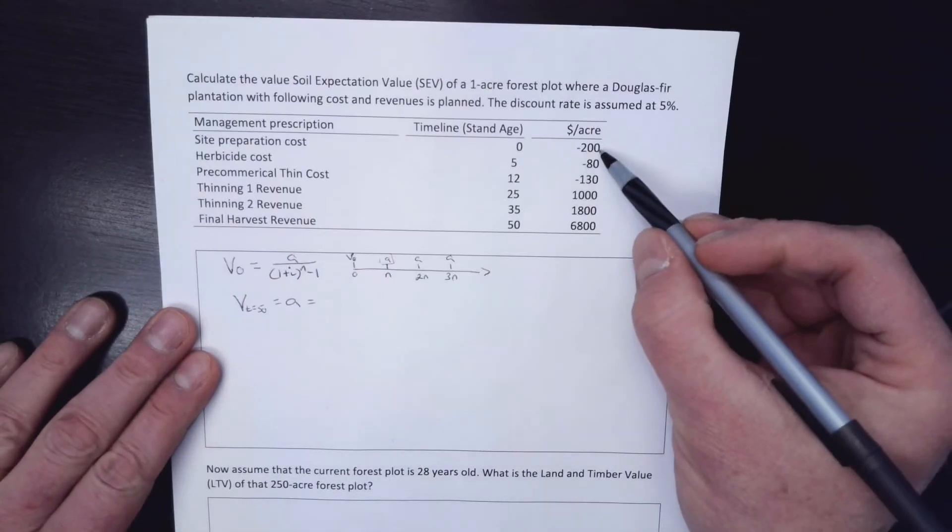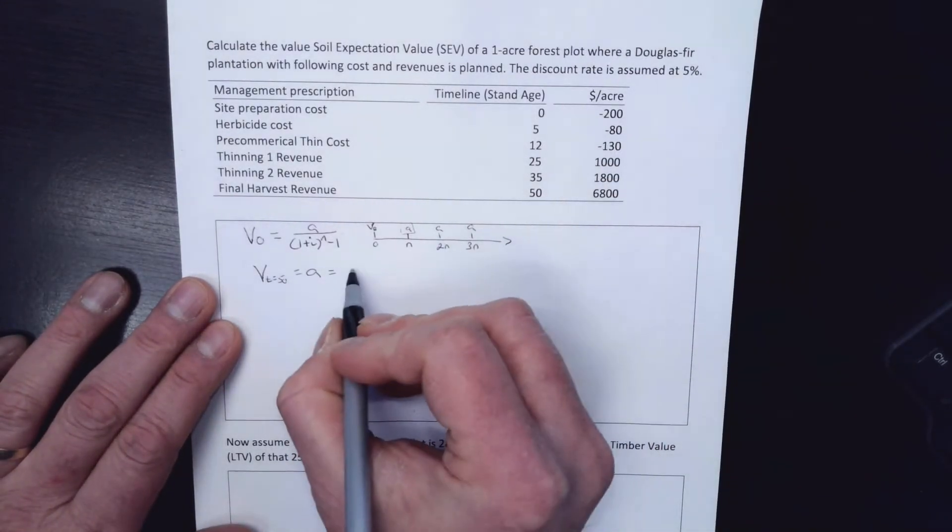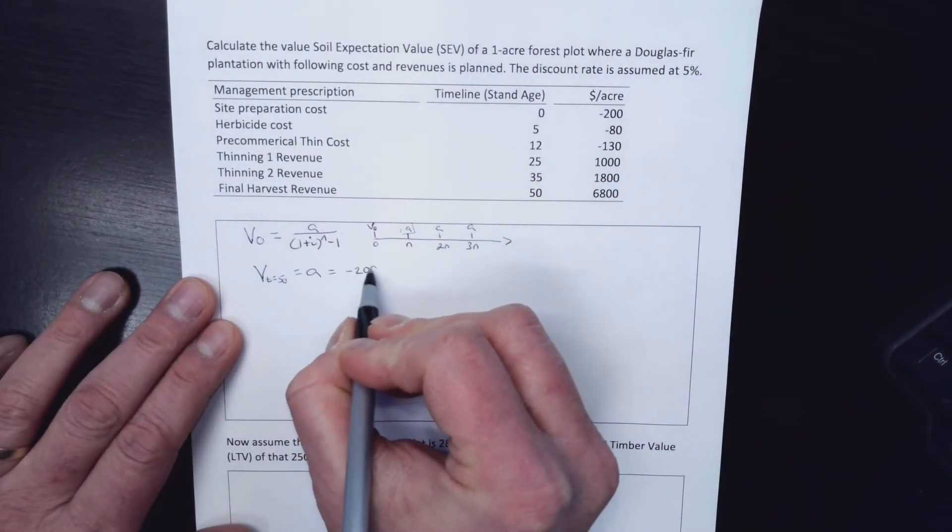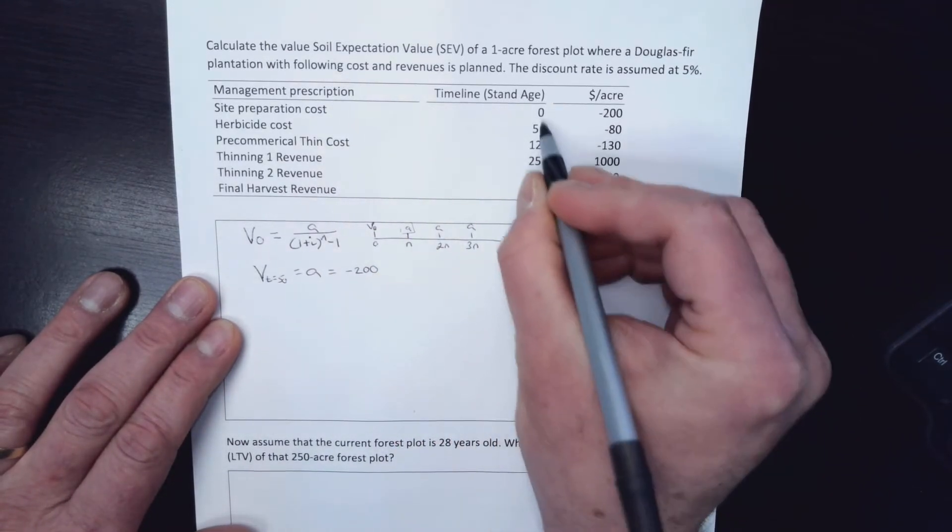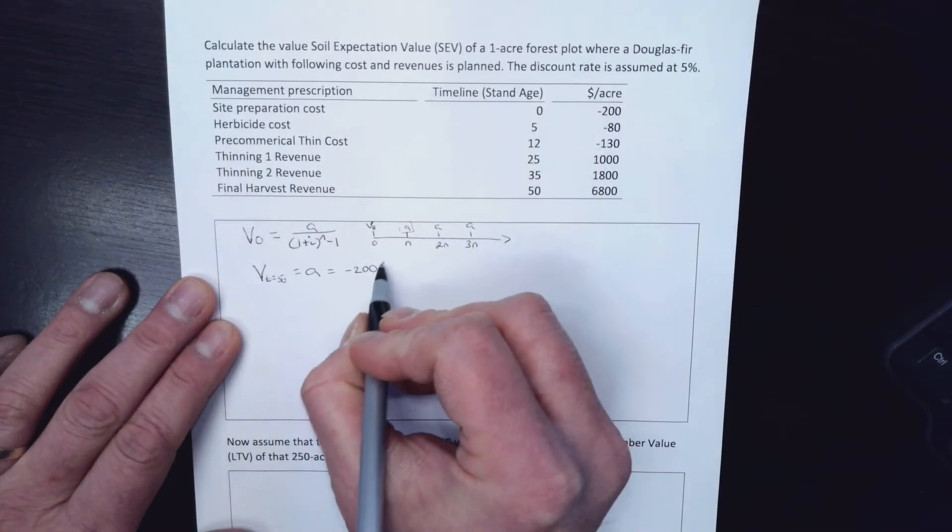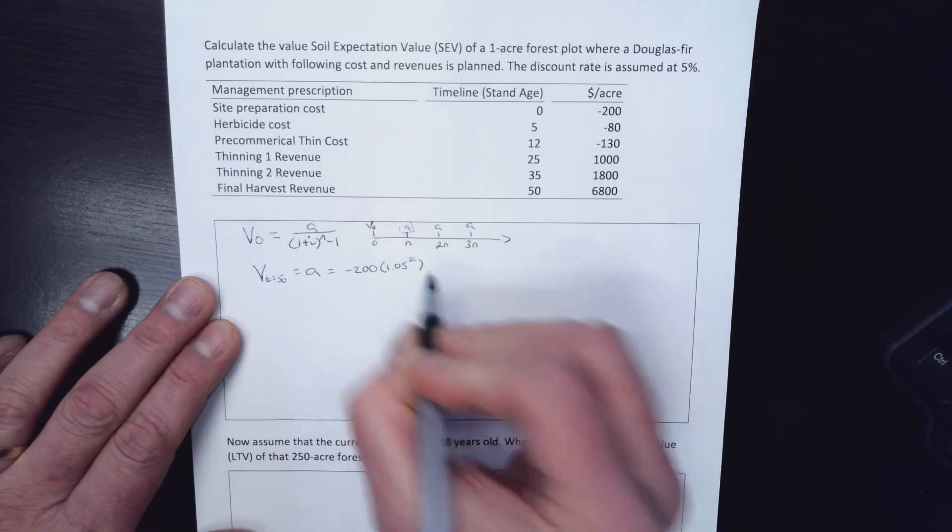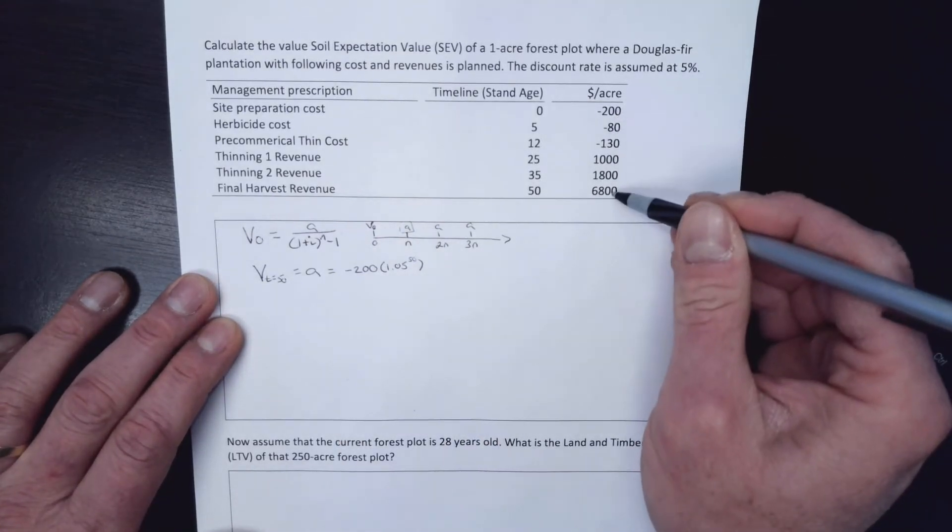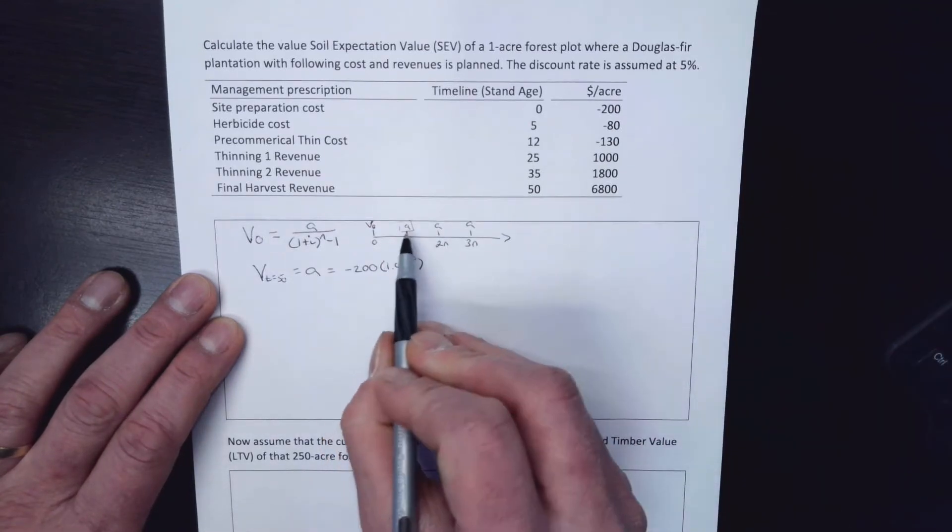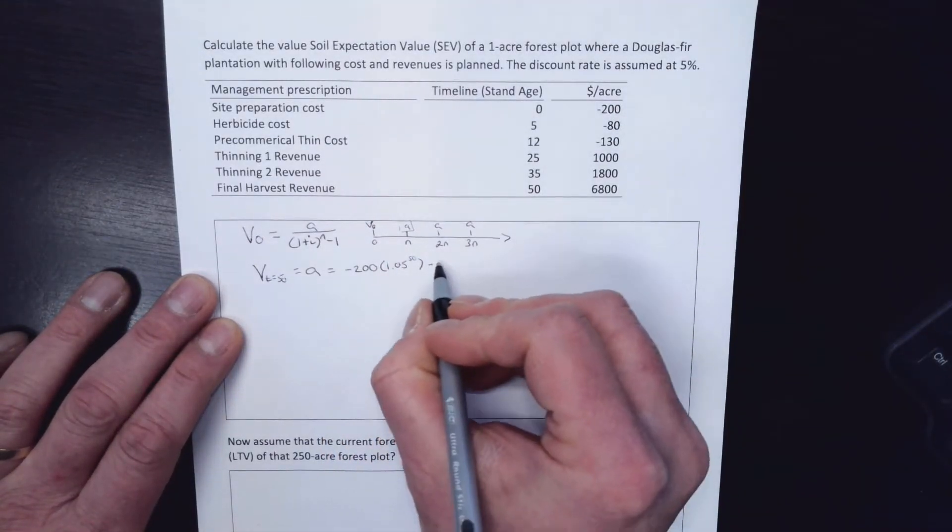Well, I've got to slide all of these values out. So let's start with this $200 value. Minus $200. So to get it out to the end here, I have to move it forward 50 years. 1.05 to the 50. And that's taking this negative $200 and moving it out to the end where that A is. So I only have to apply that once.